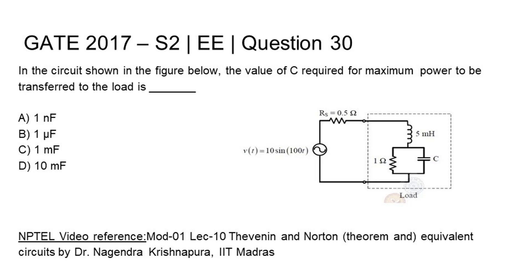Question 30, electrical engineering GATE 2017 set 2. In the circuit shown in the figure below, the value of C required for maximum power to be transferred to the load is dash. Four options are given to us.